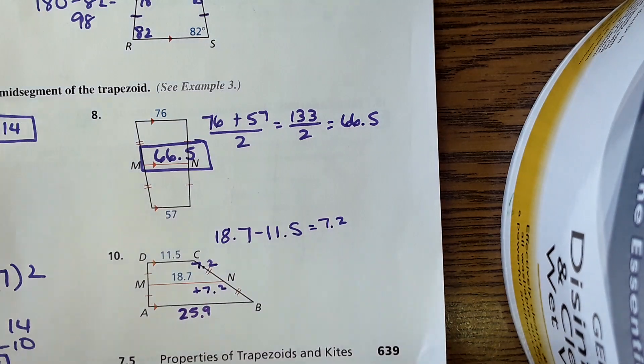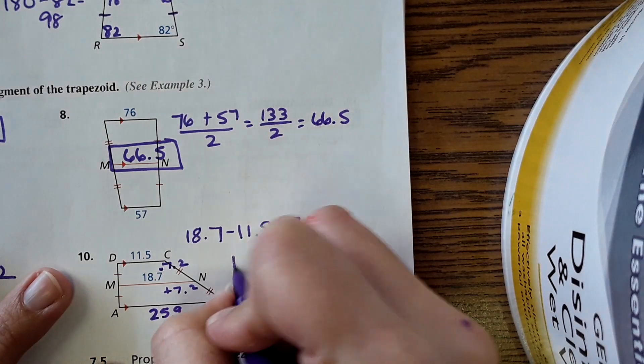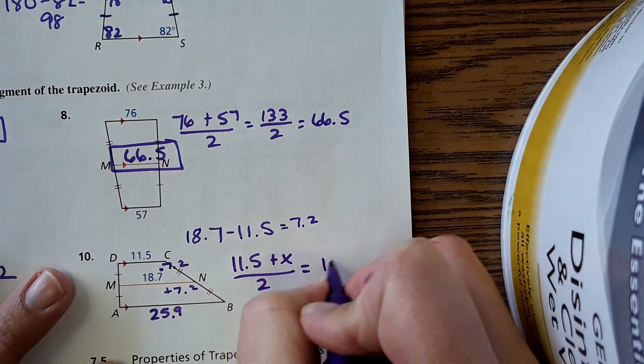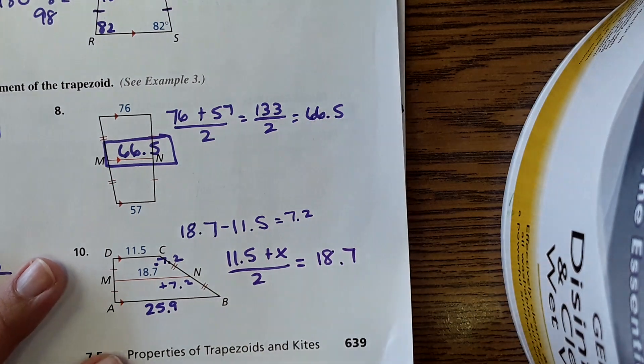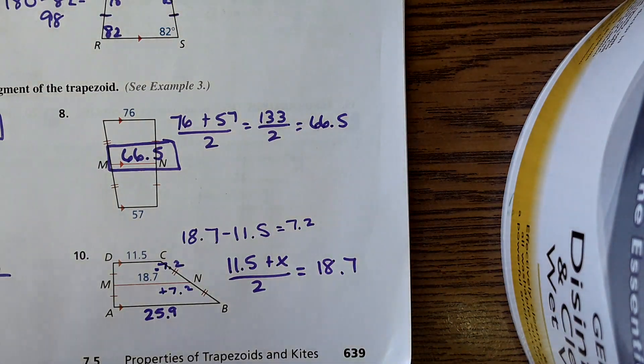If you're more of an equation type of person, then you could do 11.5 plus x divided by 2 equals 18.7 and solve it that way. I'll just leave it like that so it doesn't get confusing.